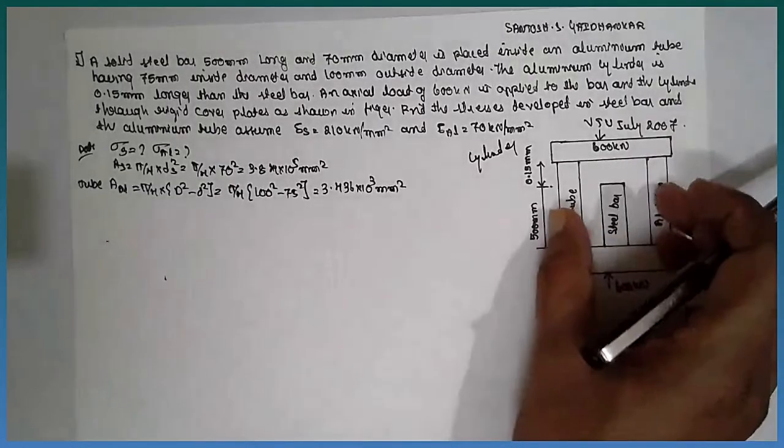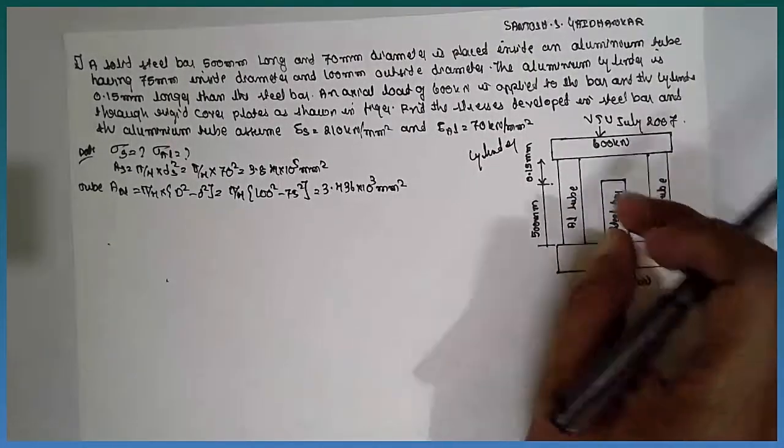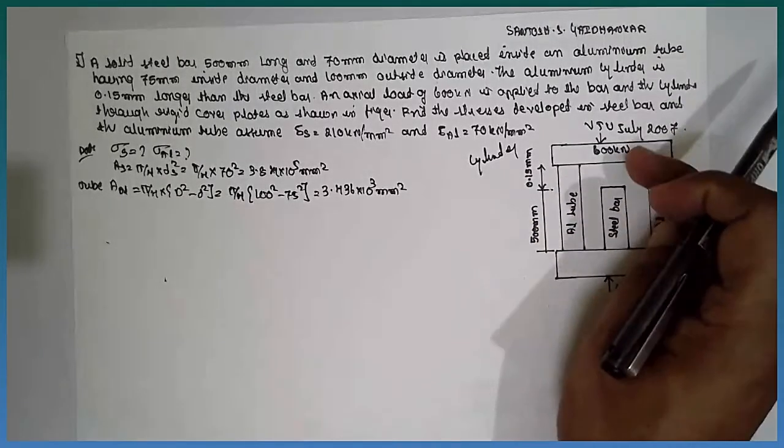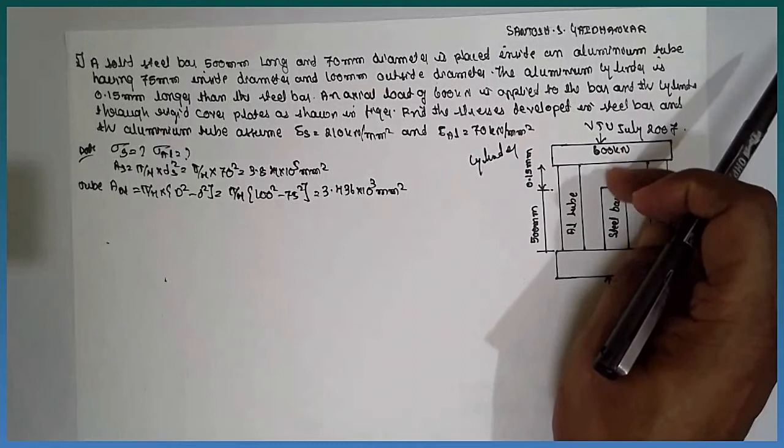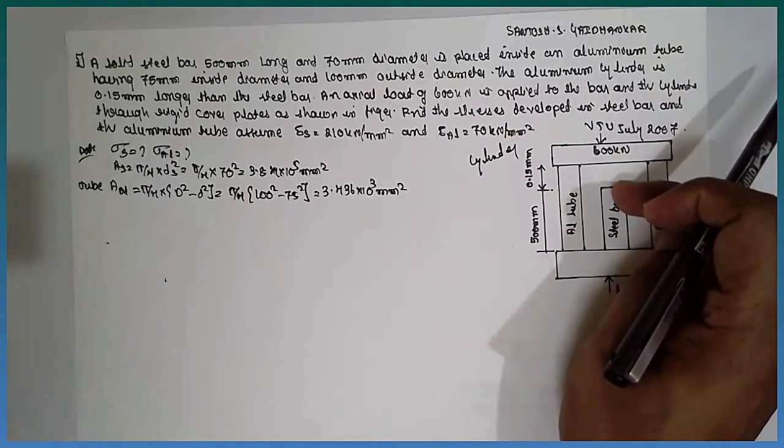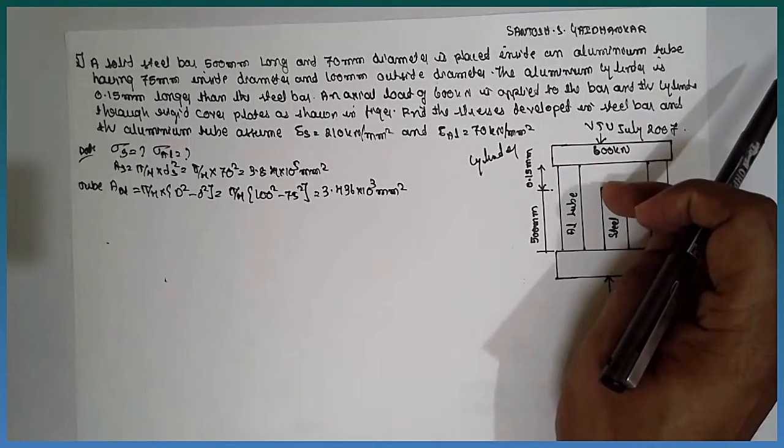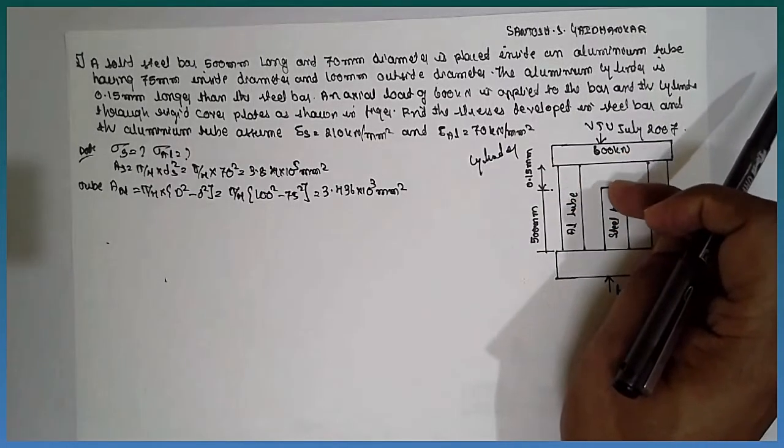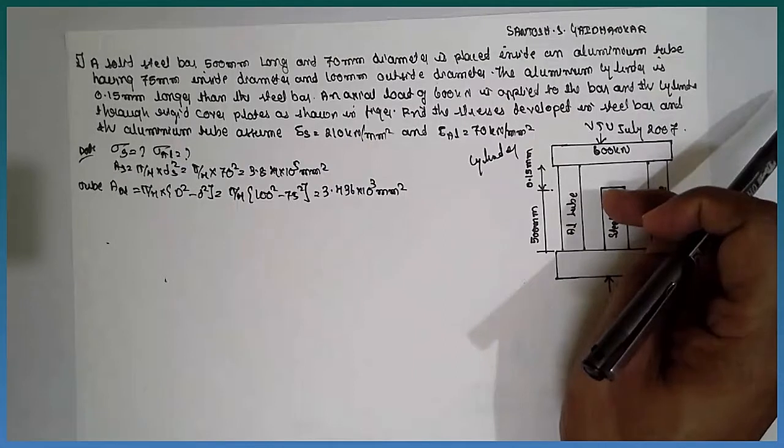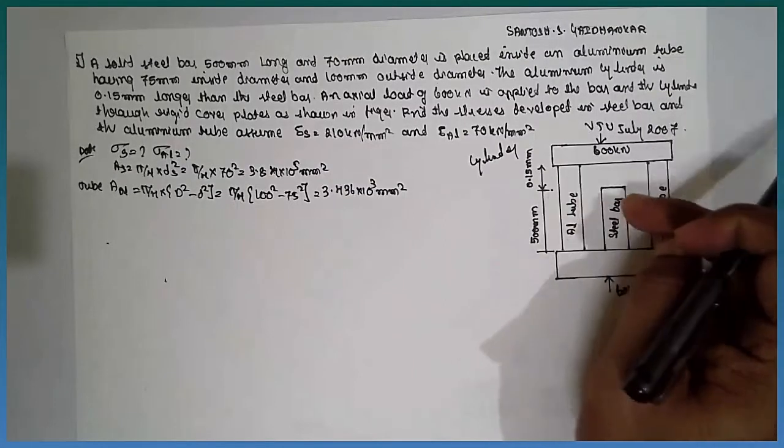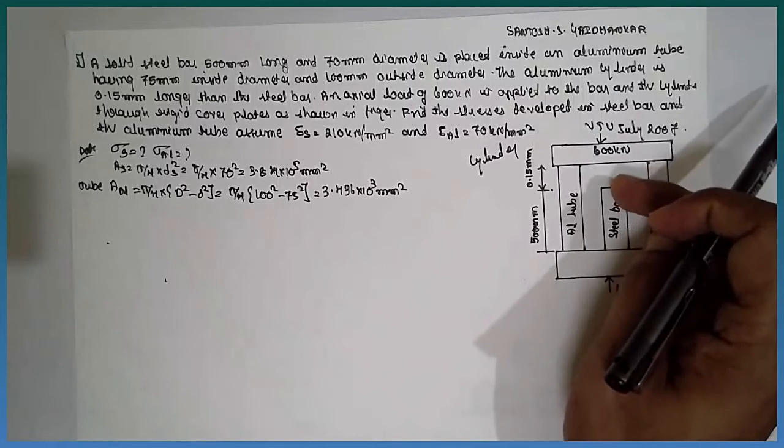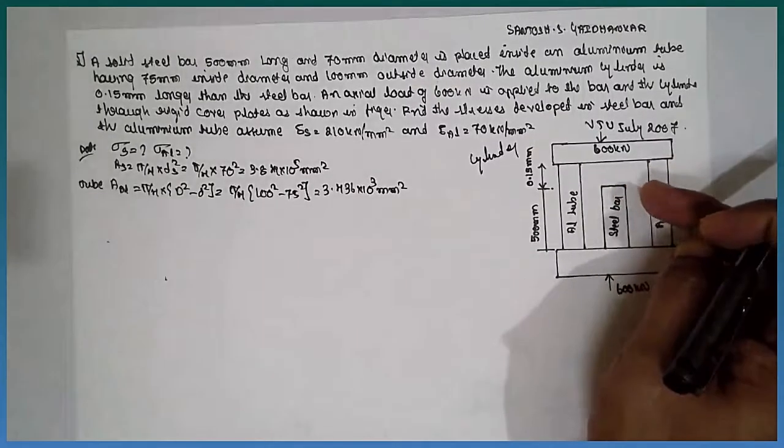Now, from the figure, as the tube is subjected to 600 kN load, there is a gap provided of 0.50. Because of this, the load deformation occurs and the load will reach here. At this point, the load will not be 600 kN. There will be a reduction in the load because the tube and the steel also carry the load. We have to find out what amount of load has to be deducted.